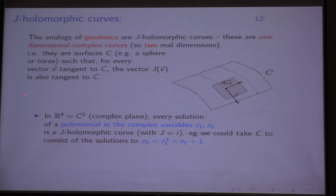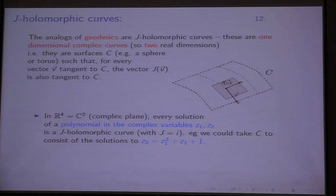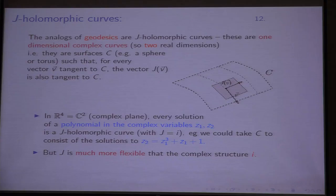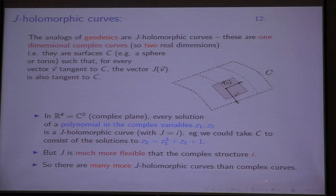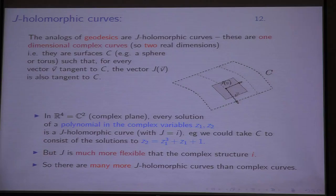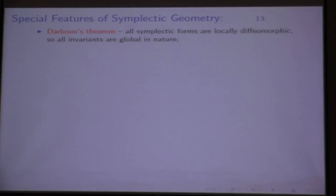In the complex plane, if you take a polynomial in complex variables Z₁, Z₂ and look at the solution set, you get a J-holomorphic curve with the standard J. But J is a much more flexible operator than the complex structure i — i is very rigid, while J just specifies what it does at each point in the tangent space. So there are many more J-holomorphic curves than complex curves. For example, in ℂP², you can look at a tame almost complex structure and ask what degree-27 J-holomorphic curves look like compared to complex curves of that degree — whether they're essentially the same.